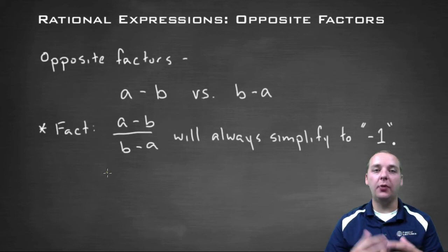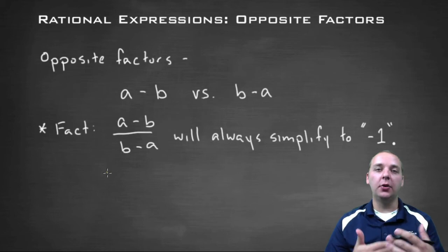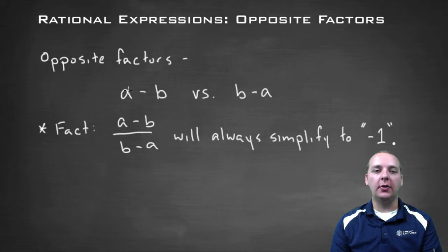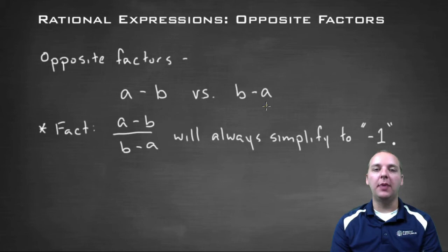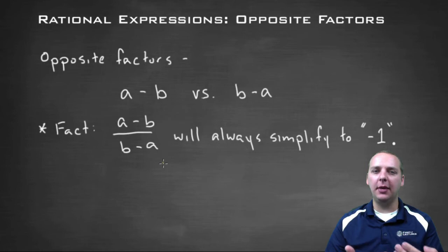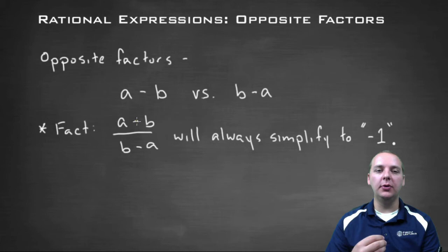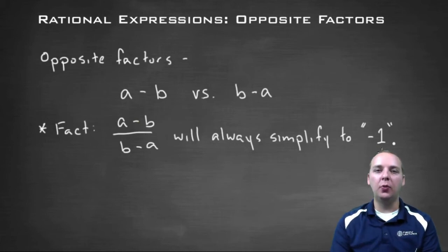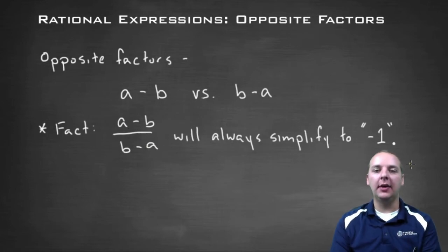Occasionally when we're trying to simplify a rational expression, we'll get two different factors that are what we call opposites of each other. One factor, let's say, is A minus B, and the opposite of that factor would be B minus A. So if you have A minus B over B minus A, it turns out you actually can reduce those, but it will always reduce to the number negative one. So they don't exactly just cancel — they actually leave a negative one.